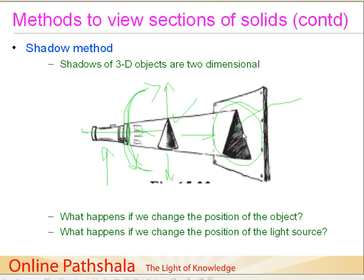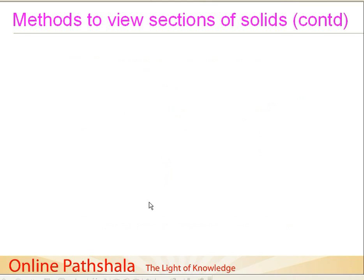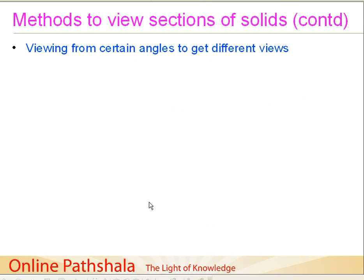One of the most interesting and commonplace examples is that of a shadow cast by the sun. The sun is a light source for objects. Just try to reflect on what happens when the sun changes its position throughout the day — what happens to, say, the shadow of a light pole? That may explain what you can observe by varying the object and light source. Now let us go on to discuss the third method, which is viewing an object from certain angles to get different views.